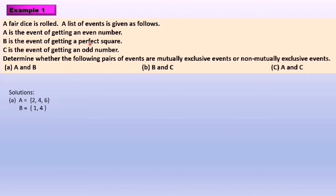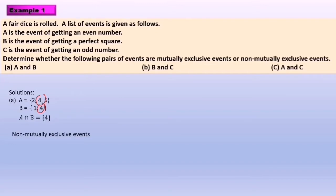B is the event of getting a perfect square, so we have 1 and 4. After listing out the elements of Set A and Set B, we check whether they have a common element. The common element of Set A and Set B is 4. So Set A intersect Set B equals {4}. Conclusion: event A and event B are non-mutually exclusive events.